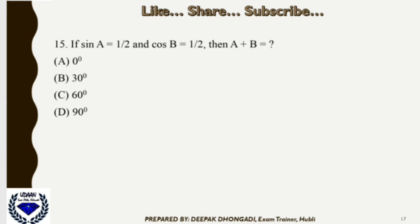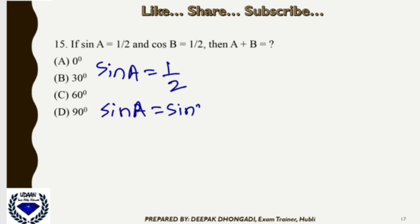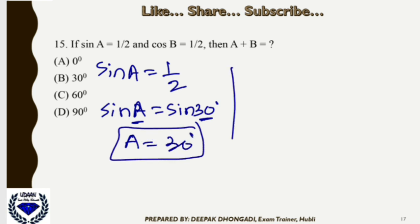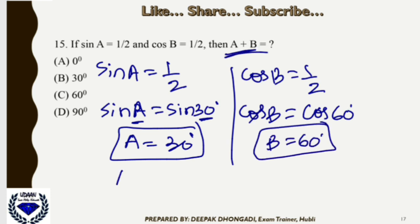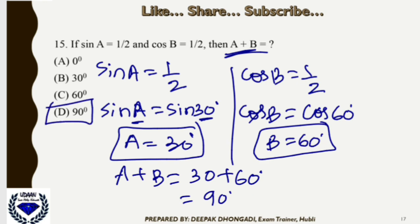Question 15: If sinA = 1/2 and cosB = 1/2, find A+B. Since sin30° = 1/2, A = 30°. Since cos60° = 1/2, B = 60°. Therefore A + B = 30° + 60° = 90°. The correct answer is option D.